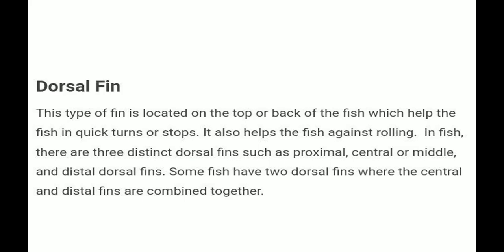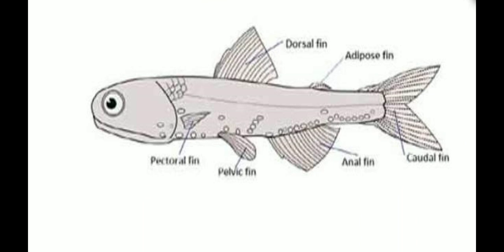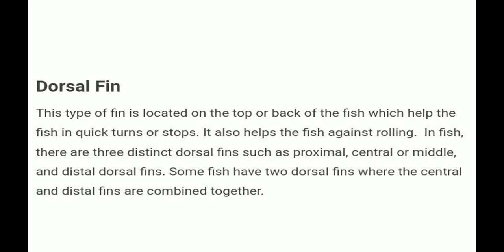First, the dorsal fin. This type of fin is located on the top or back of the fish, which helps the fish in quick turns or stopping. It also helps the fish against rolling. In fish, there are three distinct dorsal fin regions: proximal, central, and distal dorsal fin.